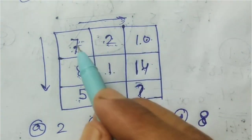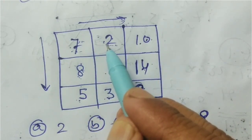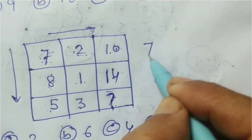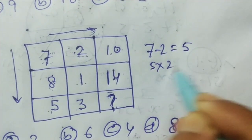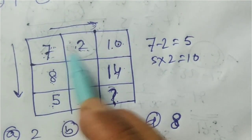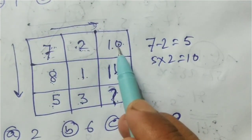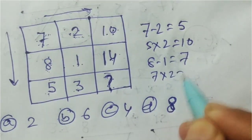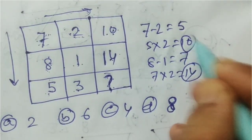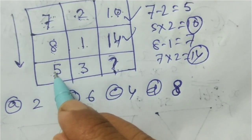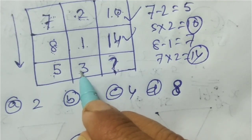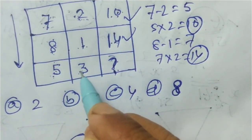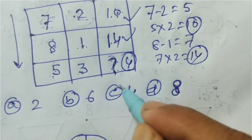Now think in this direction: 7 minus 2 is 5, and 5 into 2 is 10. Applying here: 8 minus 1 is 7, and 7 into 2 is 14 — it matches! So: 5 minus 3 is 2, and 2 into 2 is 4. The answer is 4.